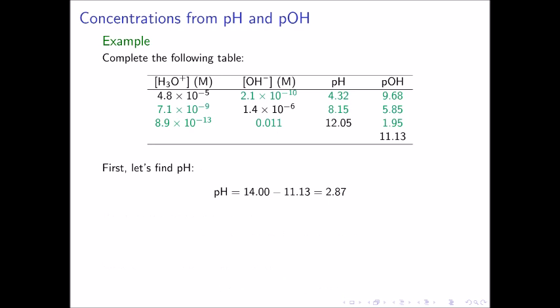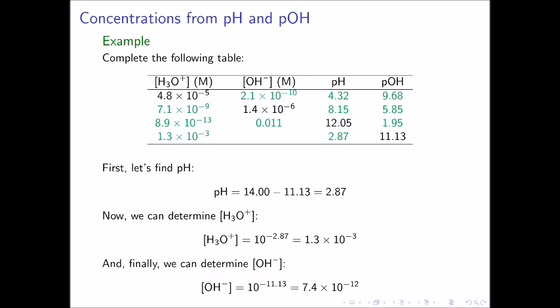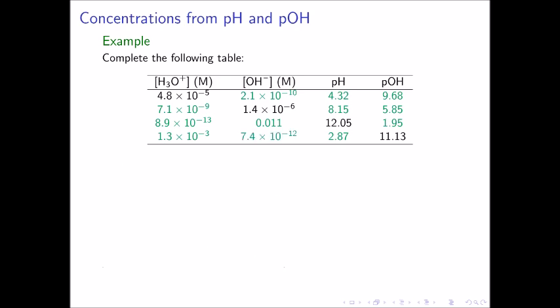And finally, the last row. The solution has a pOH of 11.13. The pH is found to be 14.00 minus 11.13, or 2.87. The hydronium ion concentration can be calculated from the pH as 10 to the negative 2.87, or 1.3 times 10 to the negative 3. And lastly, the hydroxide ion concentration is calculated from the pOH as 10 to the negative 11.13, which is equal to 7.4 times 10 to the negative 12. We have now completed the table, providing all of the information it asked for.